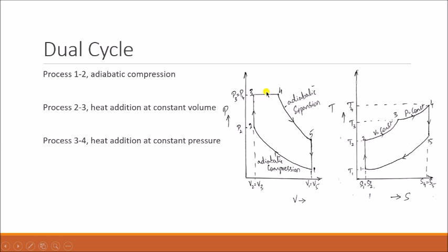After partial heat addition at constant volume, the heat is again added at constant pressure — process 3 to 4. During process 3 to 4, the pressure is kept constant while heat is added. On the TS diagram, the temperature further increases and reaches T4. The pressure P3 equals P4, which is the maximum pressure in the whole cycle, and the temperature T4 will be maximum in the whole cycle.